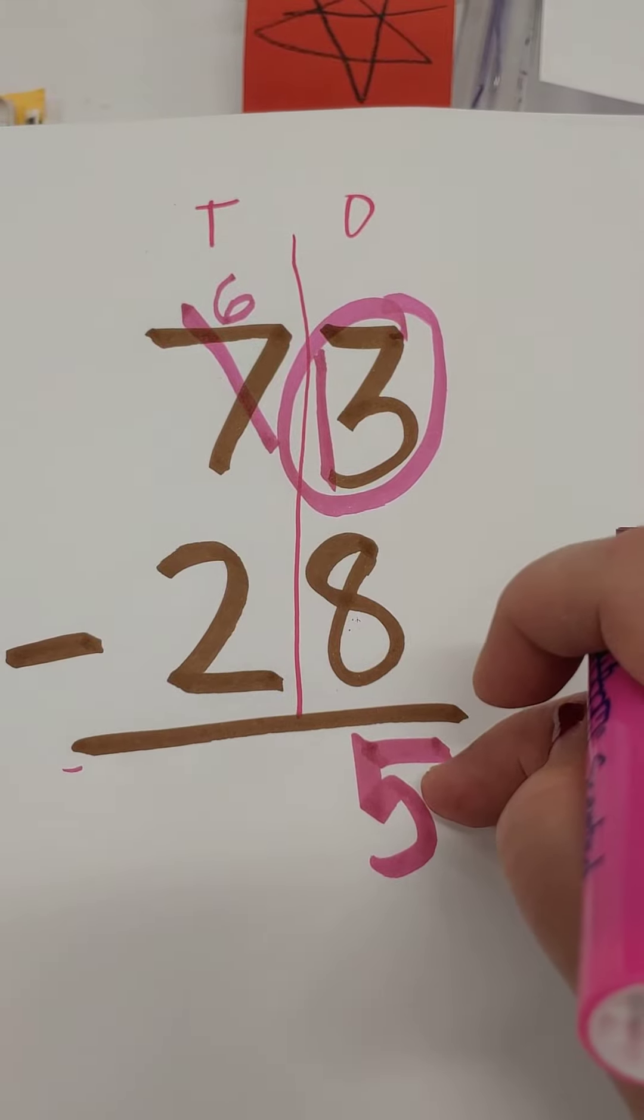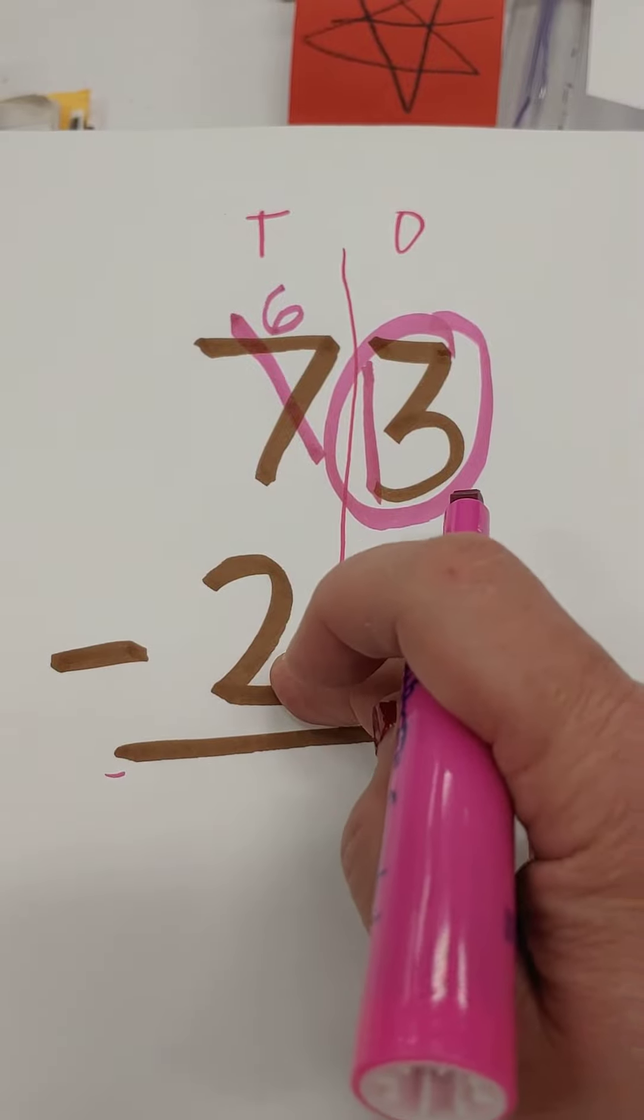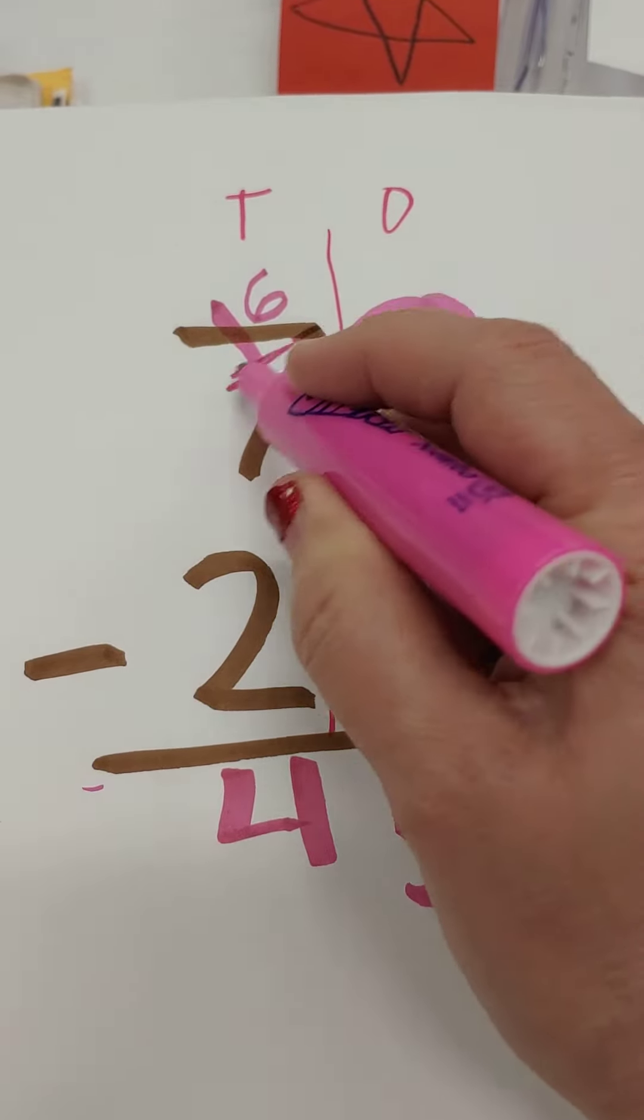So 5 is our answer. Then you do your tens. Start at the top. 6 minus 2 is 4. This is done. Remember, don't even worry about that.